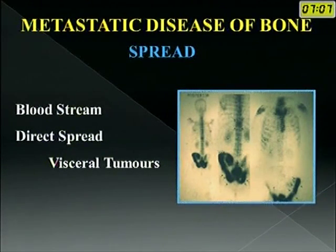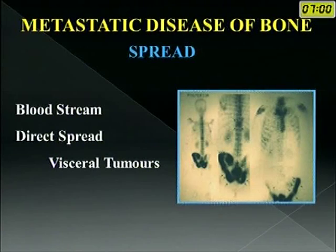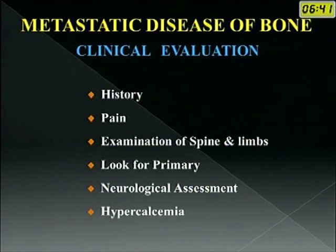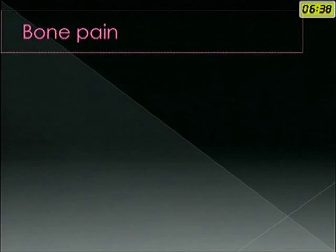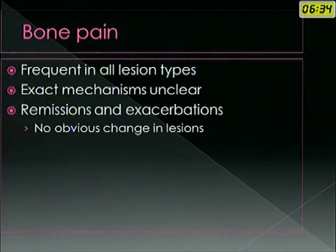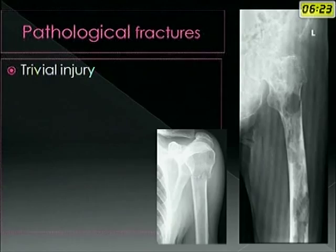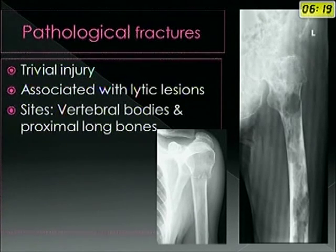The commonest mode of spread is by the bloodstream, but some visceral tumors can have direct spread — for example, CA bladder can spread directly into the pelvic bone. When you see a patient with metastasis, you need a careful clinical evaluation: history, pain, examination of spine and limbs, and try to identify the primary — though more than 50% of the time you may not identify it initially. Careful neurological assessment and look for signs of hypercalcemia. Pain is very common and remission-exacerbation pattern is typical. Some metastases present with pathological fractures, usually due to trivial injury, commonly with lytic lesions in vertebral bodies and proximal long bones.